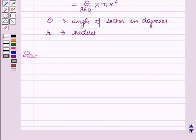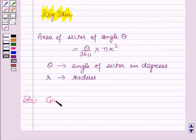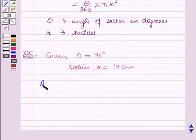Now, this result will work out as a key idea for solving this question. And now when we start with the solution, here the angle θ is given as 90 degrees and the radius is given as 14 cm. So, given θ = 90° and r = 14 cm.